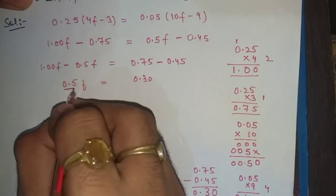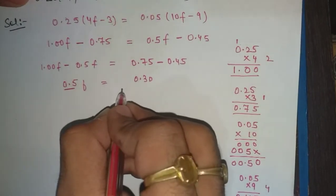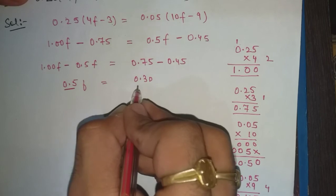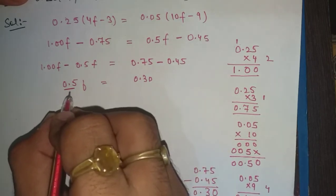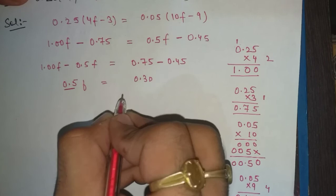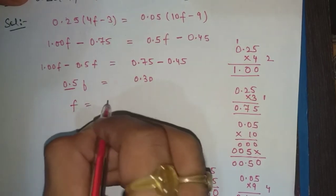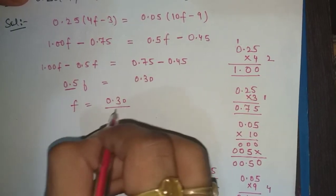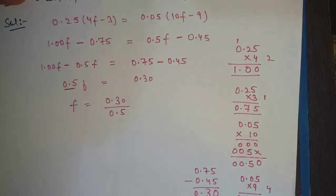So 0.5f = 0.30. This variable term goes to the other side, and when multiplication goes to the other side it becomes division. So f = 0.30 divided by 0.5.